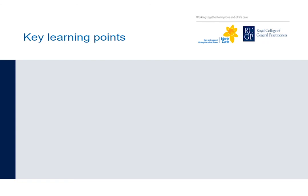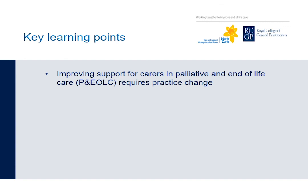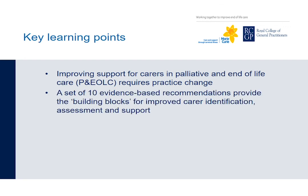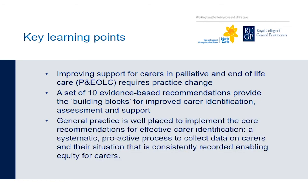This brings us to the end of this module on identifying carers. There are a number of key learning points to take away. Improving support for carers in palliative and end-of-life care requires practice change. A set of ten evidence-based recommendations provide the building blocks for improved carer identification, assessment, and support. General practice is well placed to implement the core recommendations for effective carer identification — a systematic, proactive process to collect data on carers and their situation that is consistently recorded, enabling equity for carers at end-of-life.